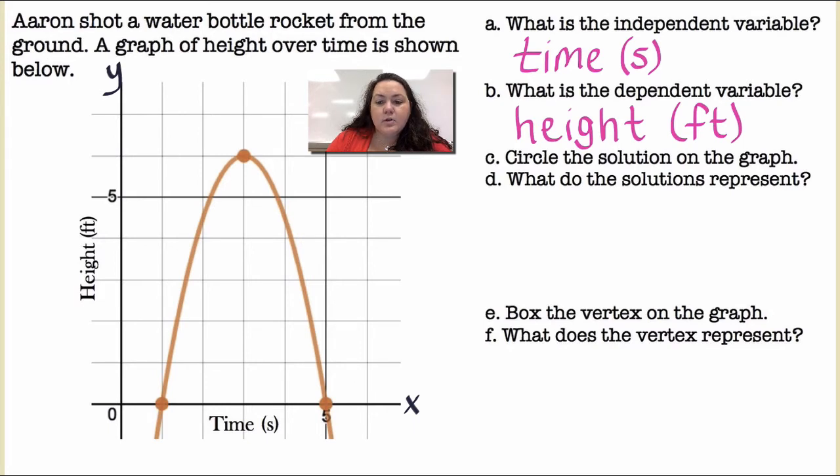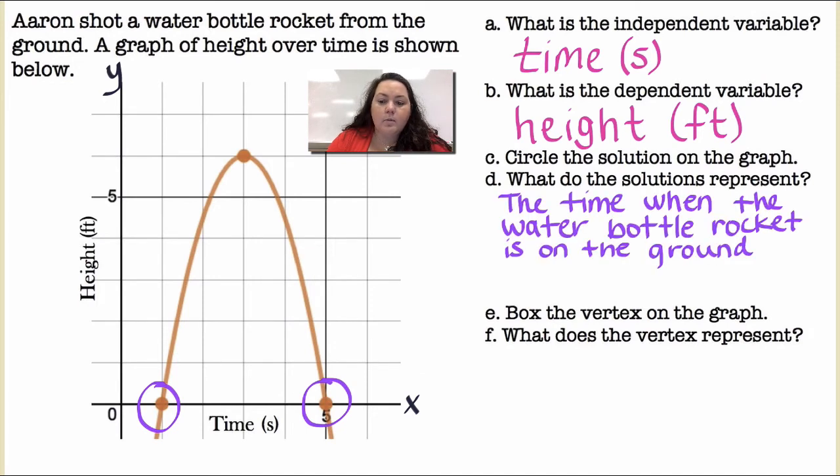Then part c, it says circle the solutions on the graph. So the solutions is where it's crossing the x-axis. So I have two solutions right there. What do the solutions represent? Okay, so this is height from the ground. So if it's at a height of zero, then that means that they are at the ground. Right, so the time when the water bottle rocket is on the ground. And that would be at one second and five seconds. So launched at one second and lands at five seconds.